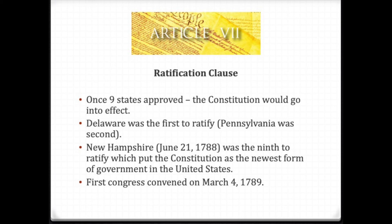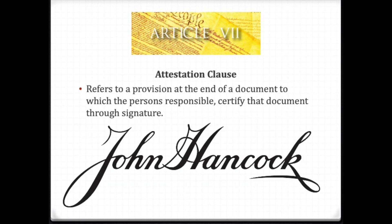Officially, we would have convened the first Congress on March 4, 1789. So if you want to know the Constitution's birth date, there you go. The last section of Article 7 is the Attestation Clause, which simply refers to the end of the document where those responsible certify that document, usually through signature.